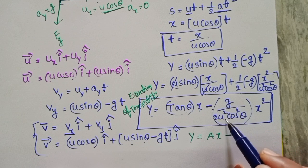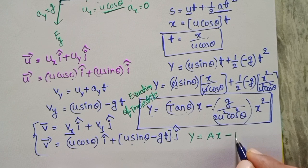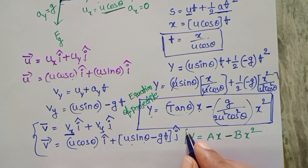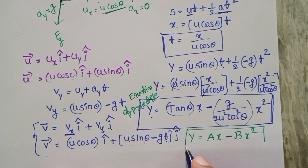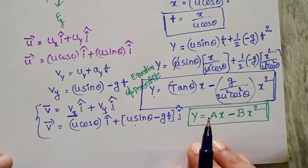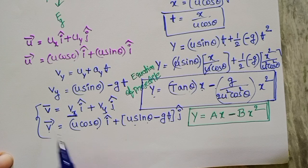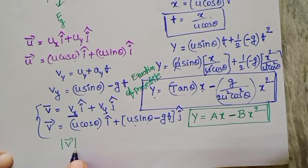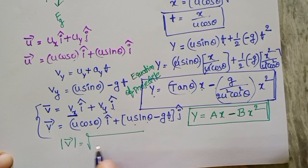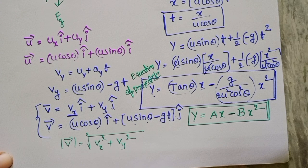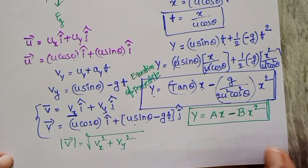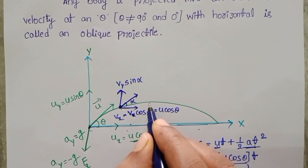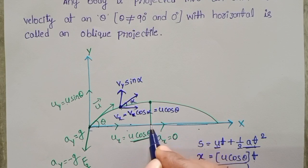Taking g/(2u² cos² theta) as b, the equation becomes y = ax − bx². This is the equation of trajectory, which is of the form of a parabola. To find the resultant velocity at any given instant, use: |v-bar| = √(v_x² + v_y²). Use this formula to find the resultant velocity.